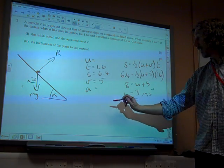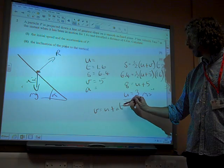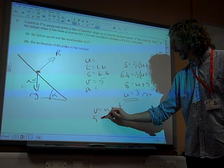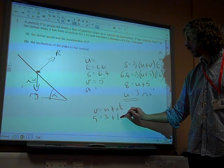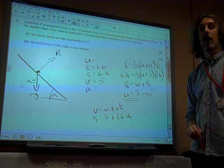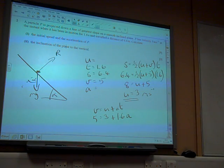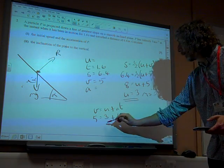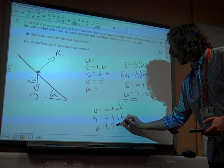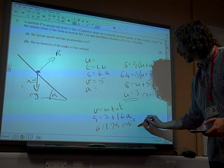We can use whatever we want now. I'm going to use V equals U plus AT again, actually. Because 5 is 3 plus 1.6 times A. So 2 divided by 1.6 gives us 1.25. So A is 1.25 metres per second per second.